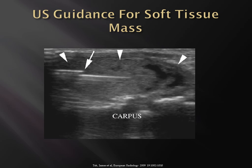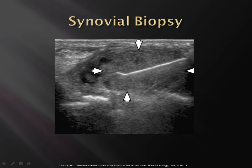This is an example of a carpal soft tissue mass — it's like any other soft tissue mass regardless of location. You want to visualize the entire throw of your device so you know what you're hitting on the far end, and you'll get a nice core of tissue. This one turned out to be a synovial sarcoma. This is a synovial biopsy in the dorsum of the wrist — again, you want to be able to visualize the entire extent of the throw.